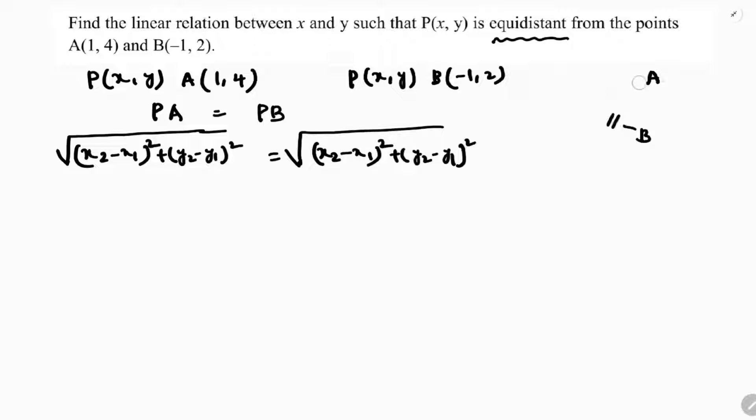Now substituting the values. Before that, let me label the coordinates: for PA, x1 y1 is P(x, y) and x2 y2 is A(1, 4); for PB, x1 y1 is P(x, y) and x2 y2 is B(-1, 2).